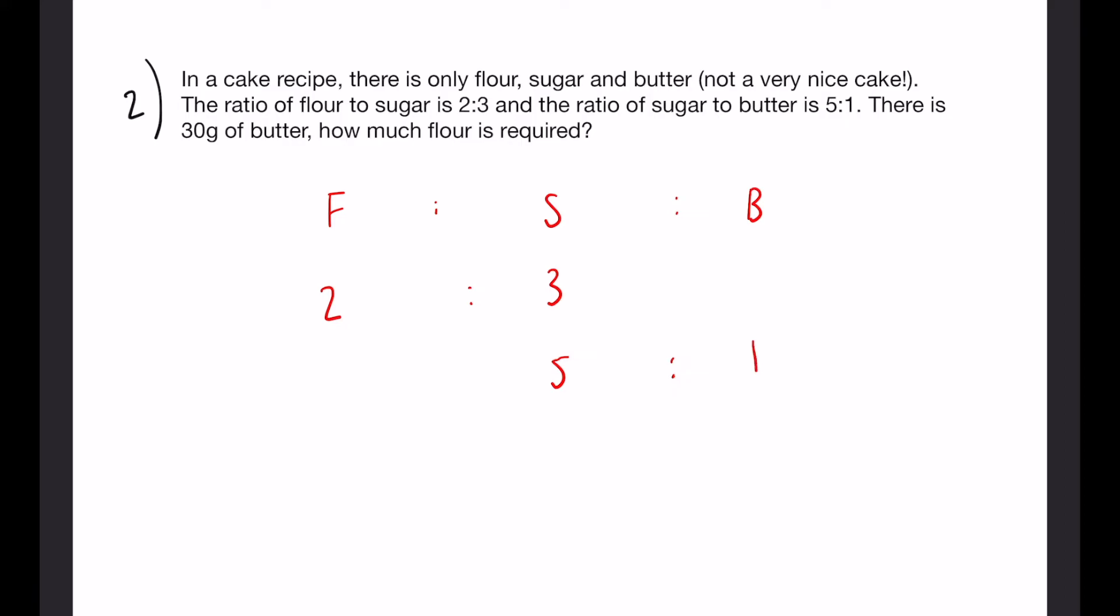Now this time you'll notice these don't multiply into each other very easily. However, we can multiply this one by 5 and this one by 3 to make the sugar, both of them 15. In doing that, we're going to have 2 is going to become 10. The sugar is going to become 15 in both ratios, which is what we want. And the butter is going to become 3.